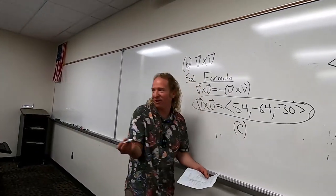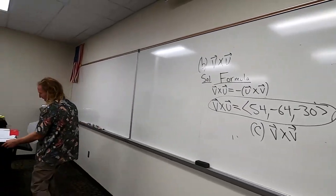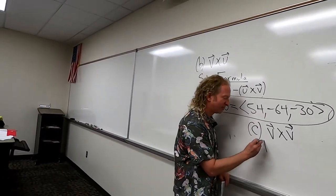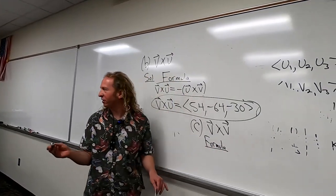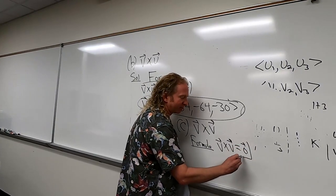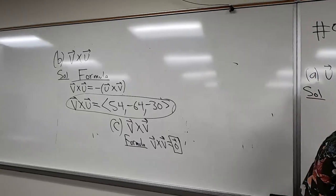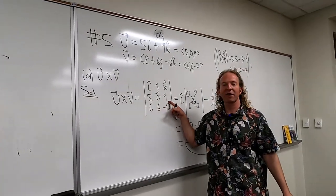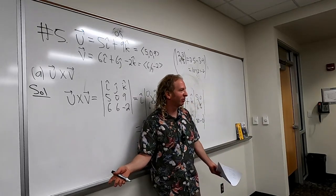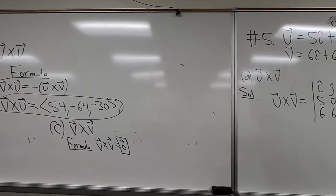Part C: v cross v. The formula is: whenever you cross something with itself, you always get the zero vector. It's easy to see from the formula — if you have the same vector in rows 2 and 3, you have two identical rows. In linear algebra, whenever two rows of a matrix are the same, the determinant is zero. So v cross v = zero vector.